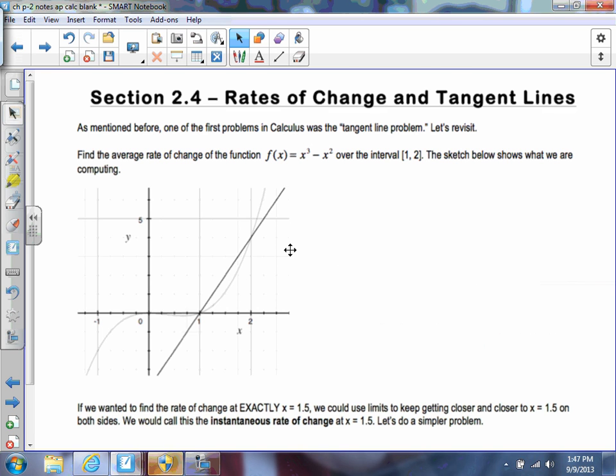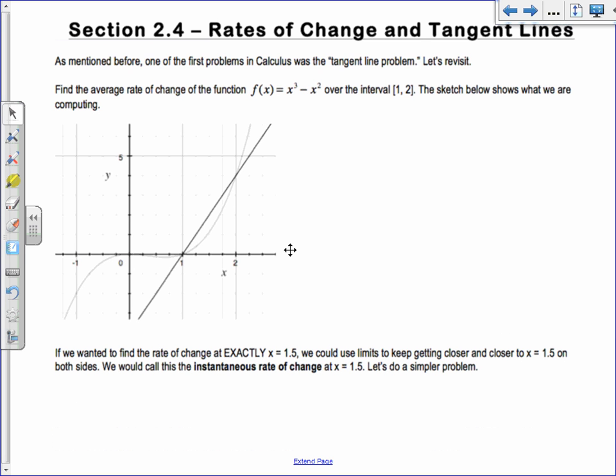So section 2.4 is on rates of change and tangent lines. This is a bit of a review of what we did in chapter P. We found the slope of the tangent line. As mentioned before, one of the first problems in calculus was the tangent line problem. So let's revisit this.